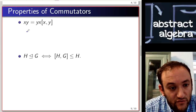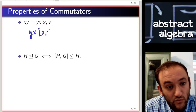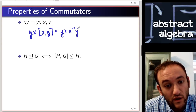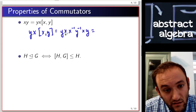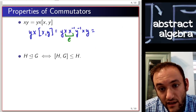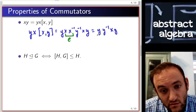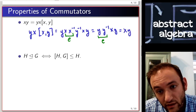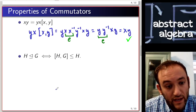Let's verify this from the formula. If we have yx times [x, y], that's equal to yx times x inverse y inverse x y. This pair combines and cancels, and we're left with y, y inverse x y. This pair also combines and cancels, and we're left with xy. That confirms the assertion: xy equals yx times [x, y].